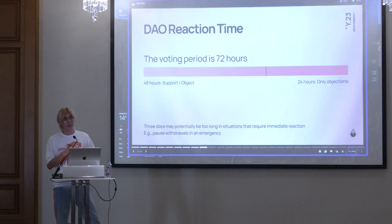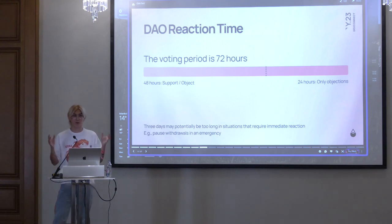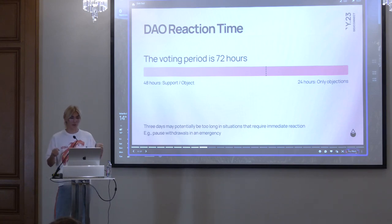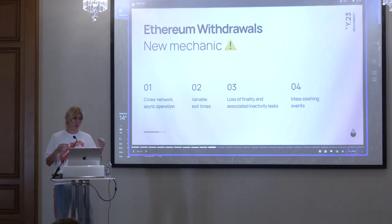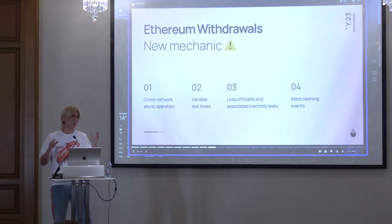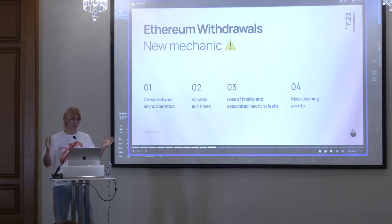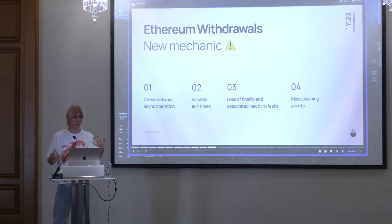That three-day minimum is problematic in emergency situations when you have to pause withdrawals immediately. You may have a potential bug and need to stop the protocol or withdrawals right away. The problem with Ethereum withdrawals is that it's a new mechanic — a cross-network async operation with a lot of variables: variable exit times, uncertainty around loss of finality, inactivity leaks, or mass slashing events. So we want to have a safeguard to protect us.